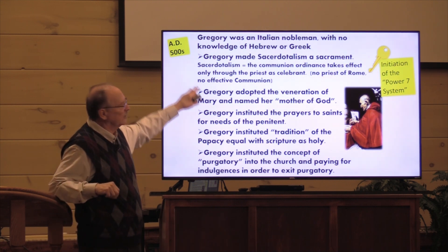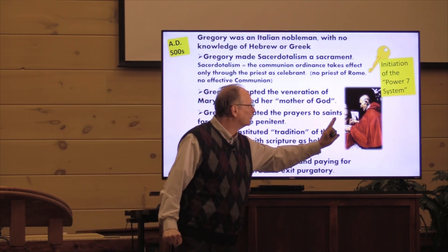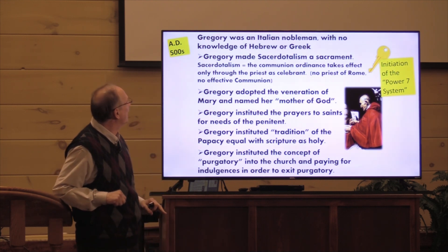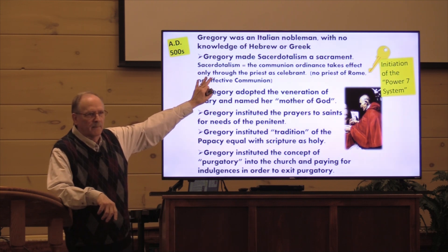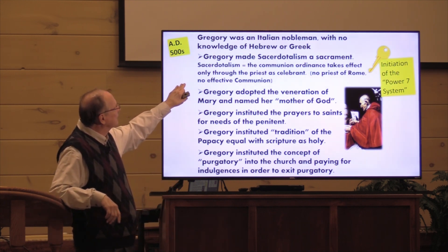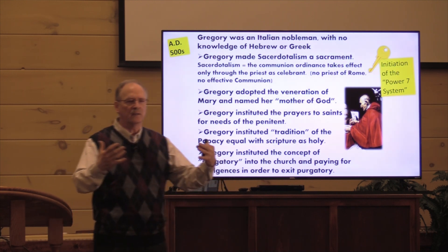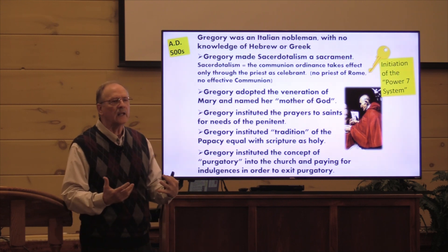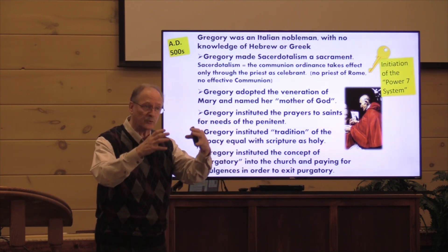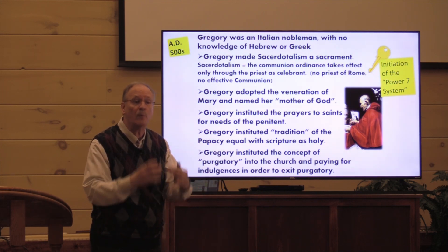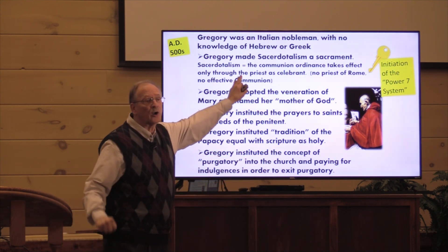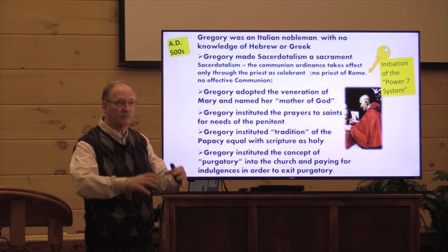In the AD 500s, Gregory the Great initiated what I call the Power 7 System. Gregory was an Italian nobleman with knowledge of Latin only — no Hebrew or Greek. He made sacerdotalism a sacrament, meaning that coming before God and making confession had to go through a Roman priest. If a Roman priest was not available, your plea to God was considered no good. It was part of the power system to take over villages, towns, and cities.